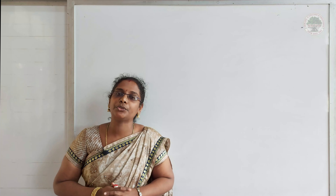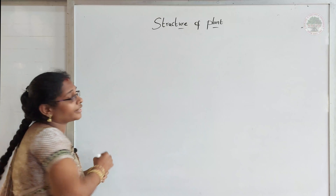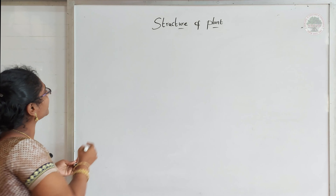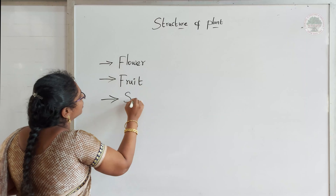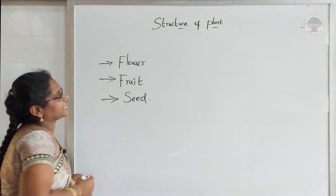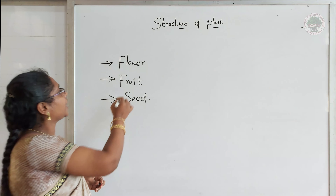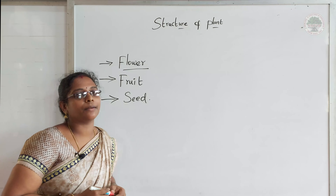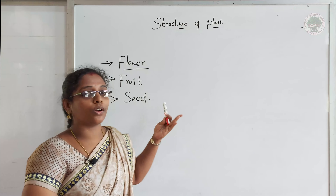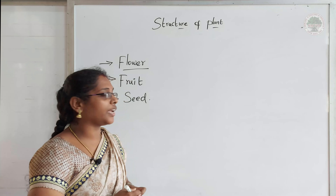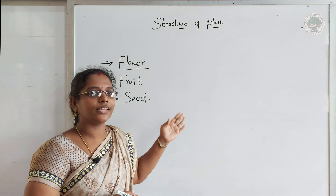Now the second part — as I already told — is the reproductive parts. There are three parts which are involved in the process of reproduction. Reproduction means producing young ones. These kinds of parts are called reproductive parts. In this video we are going to discuss about the reproductive parts of a plant. Let's see them one by one.